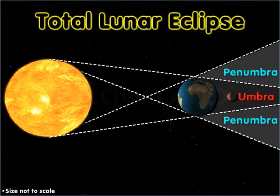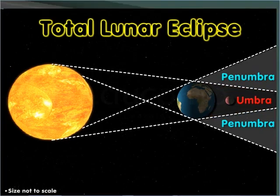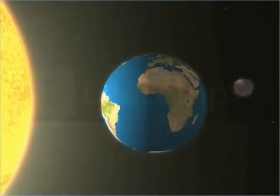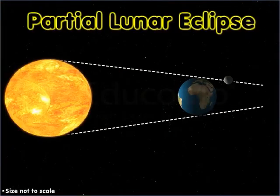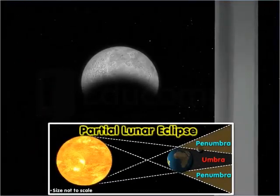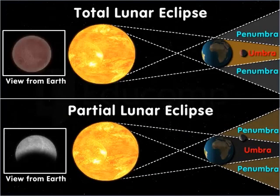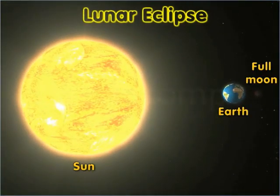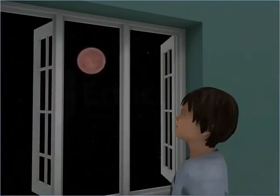A total lunar eclipse occurs when the Moon passes through the umbral shadow of the Earth. A partial lunar eclipse occurs when only a portion of the Moon enters the Umbra. A lunar eclipse occurs only at full Moon when the Moon is directly opposite to the Sun. You can watch it with your naked eyes.